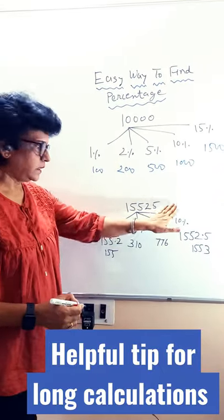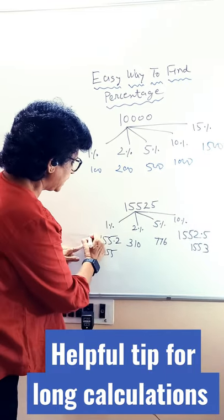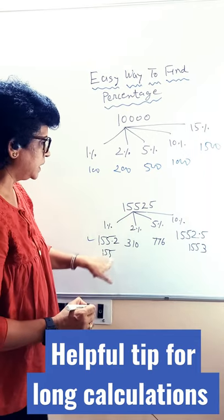if you have any odd figure, same logic applies. For 1% hide 2 digits, you are going to get 155.2. 0.2 is to be ignored, so 155.